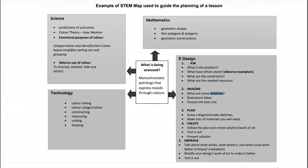Here's an example of how the STEM map is used to guide the planning of a lesson. The topic here is monochromatic paintings. You can see how monochromatic painting is related to each area under the STEM approach — how it's related to science through color theory, to mathematics through geometric shapes, to engineering design through problem solving and creating solutions, and to technology through color mixing and constructing. All of these are different methods you can explore while teaching monochromatic paintings.